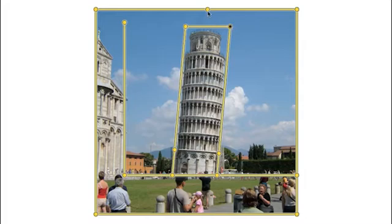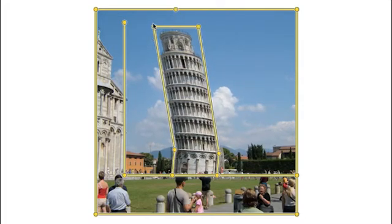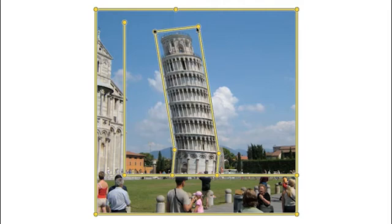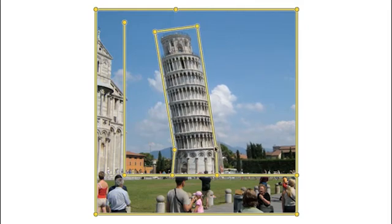Cages may be placed inside the shape and combined with skeletons and points. Here a hybrid cage is used to push the leaning tower of Pisa in the other direction.